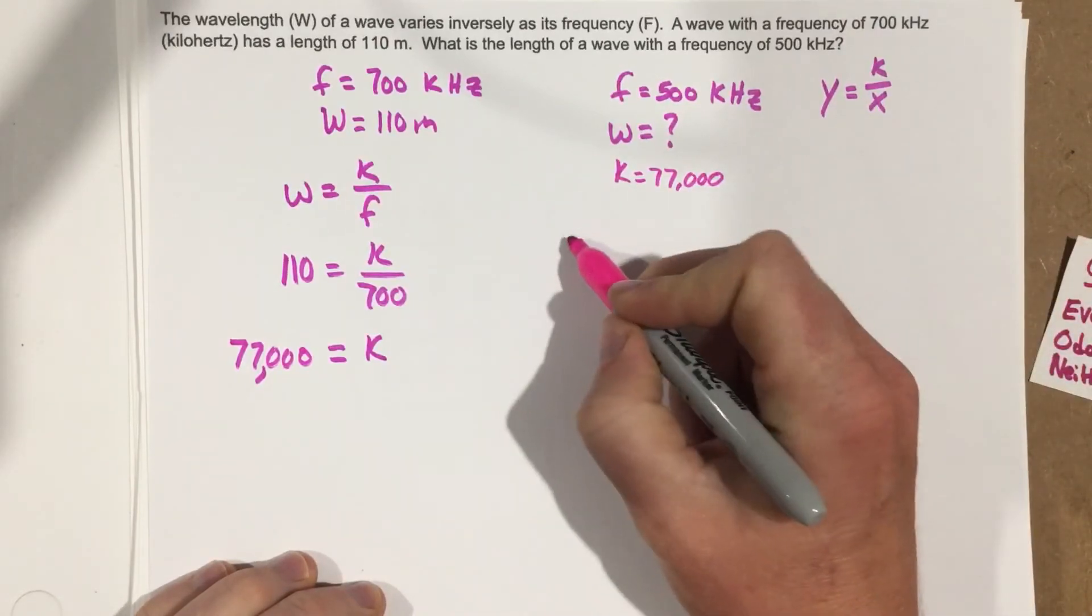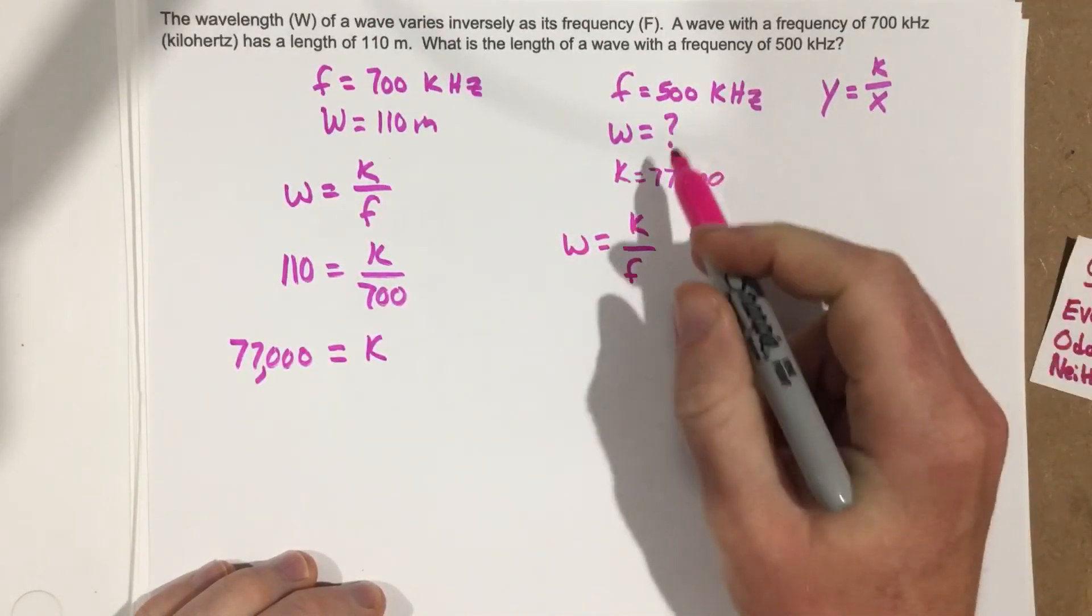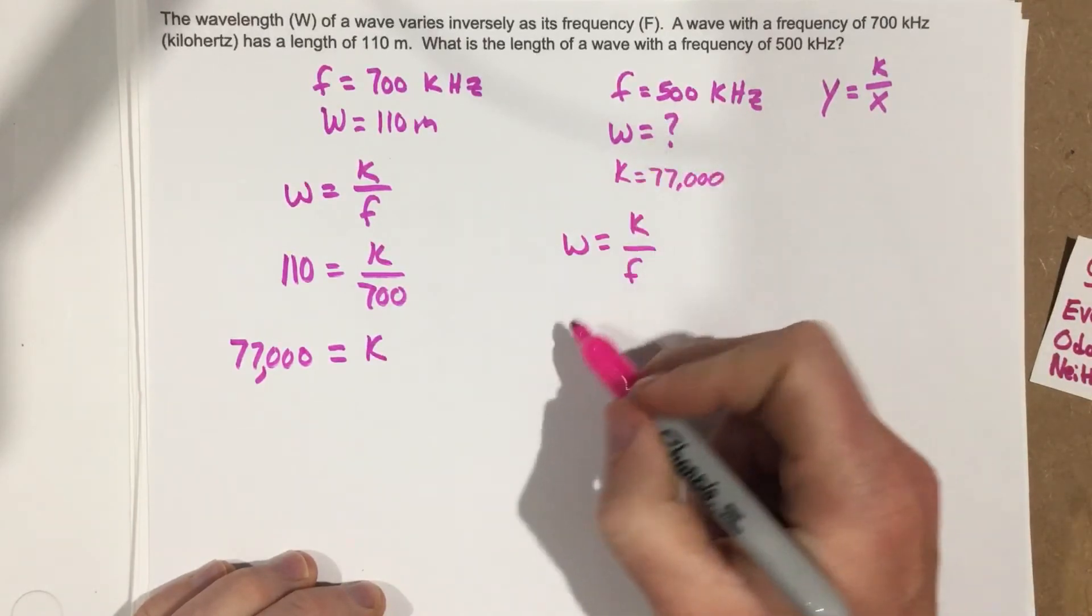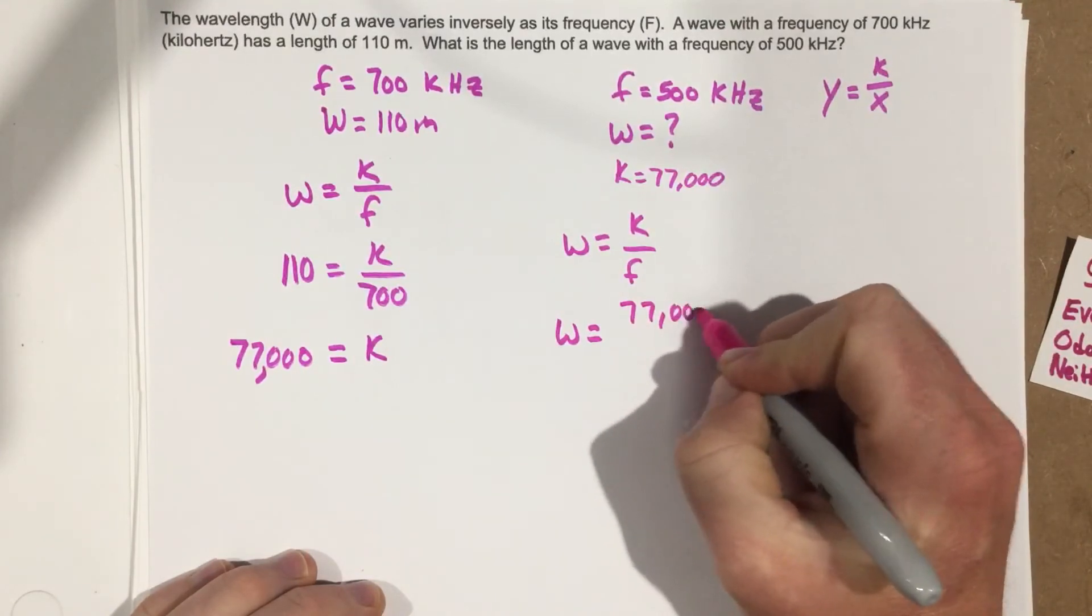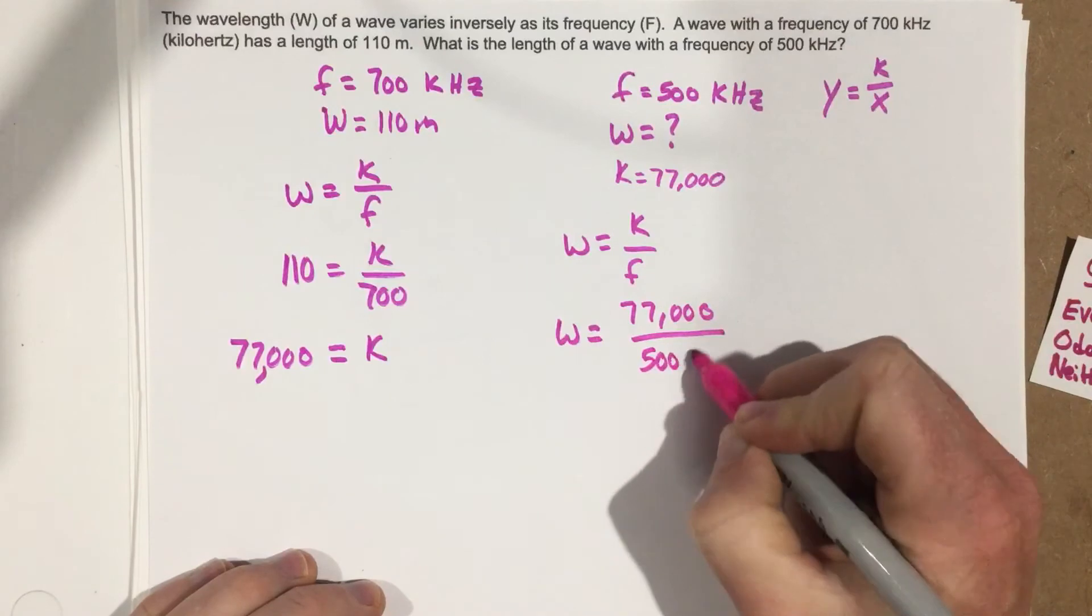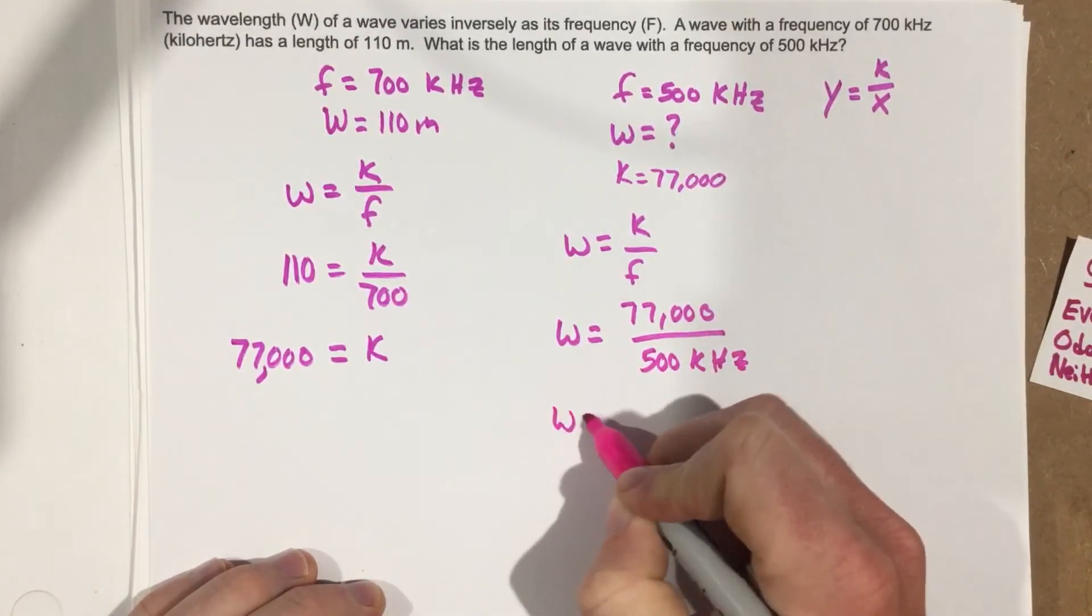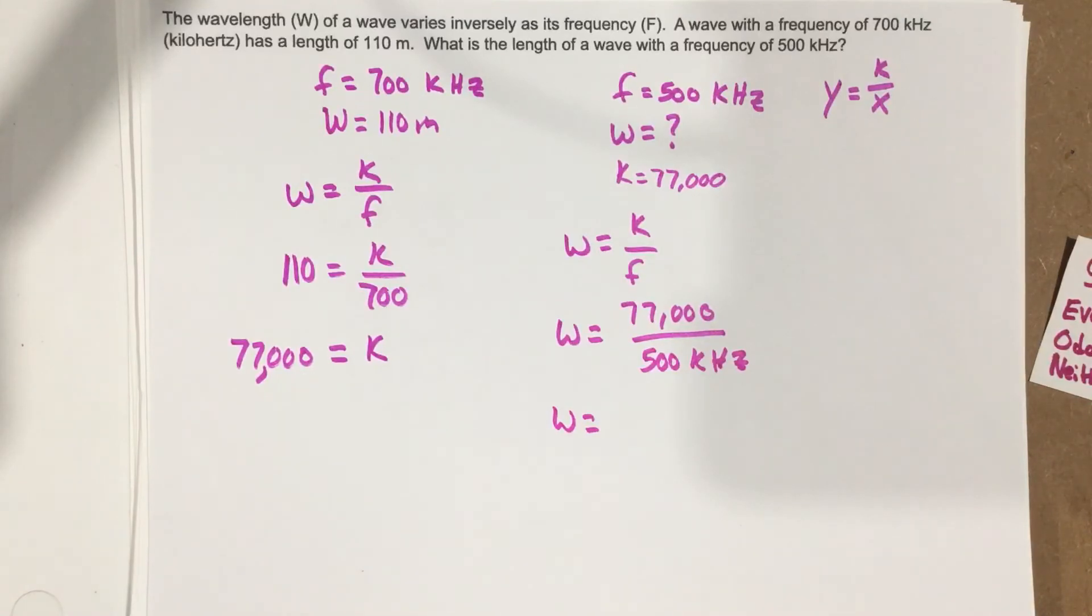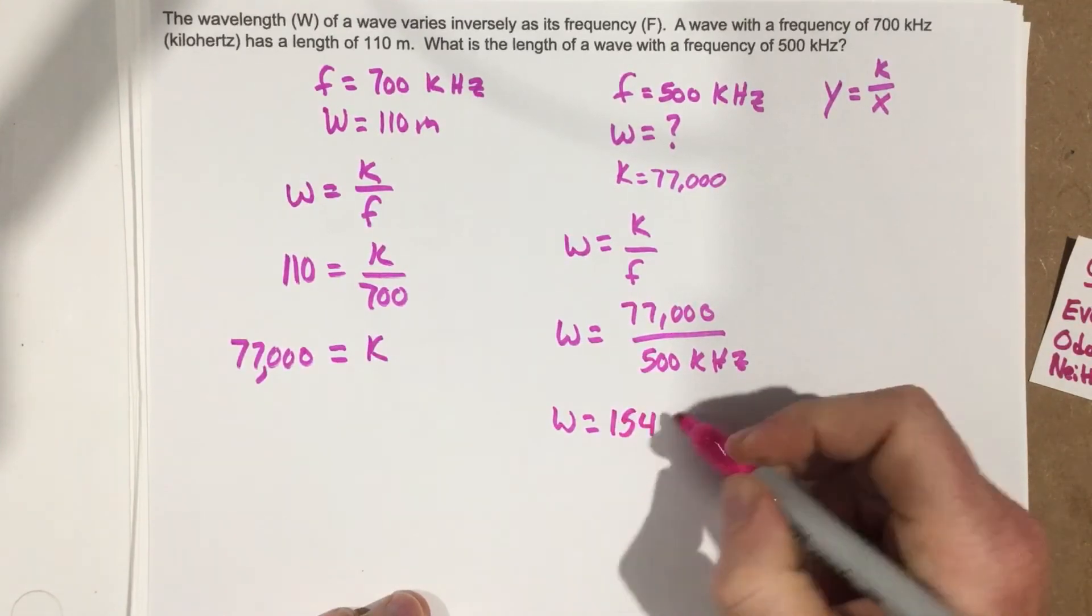So we write the same equation. This time we just plug in k and f. So we end up with w equals 77,000 over 500. And we end up with w equals 77,000 divided by 500, which is 154. And that's 154 meters.